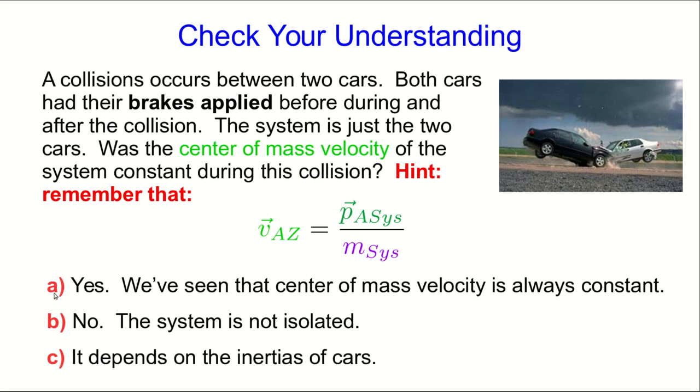So you may have been tempted to say A because it certainly looked like the center of mass velocity was very special and is always constant in a collision. But this shows us why the center of mass velocity is constant and also shows us when.